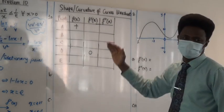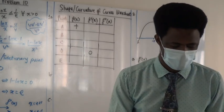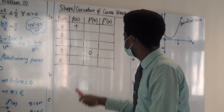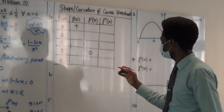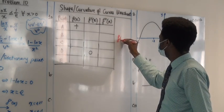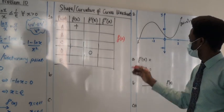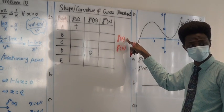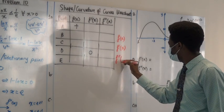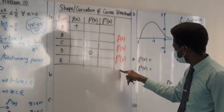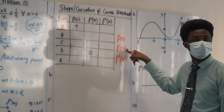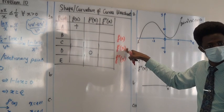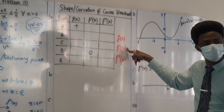The sign of the second derivative. f(x) is a function. f′(x) tells us the rate of change of the function. And since f″(x) is the derivative of f′(x), it tells us the rate of change of the gradient.